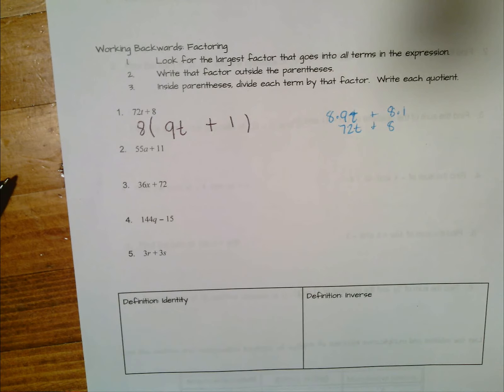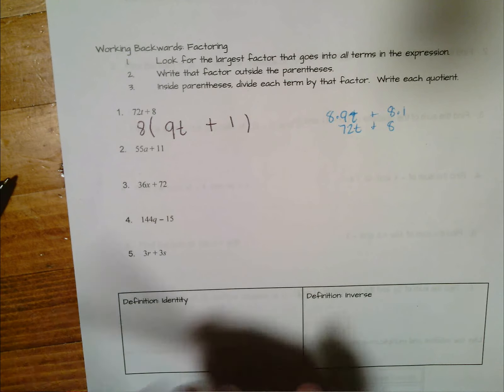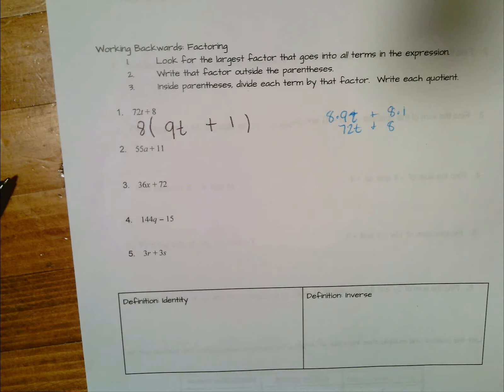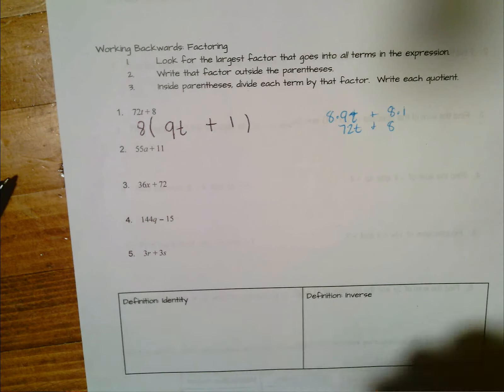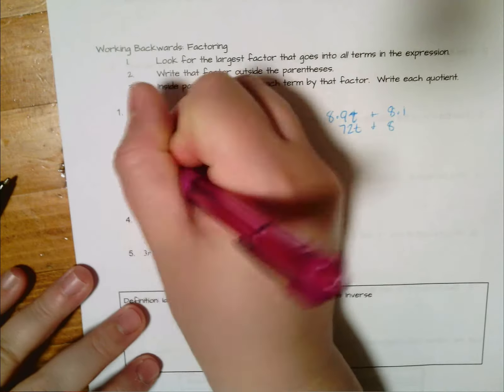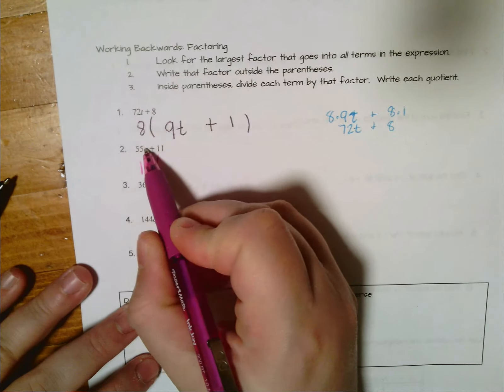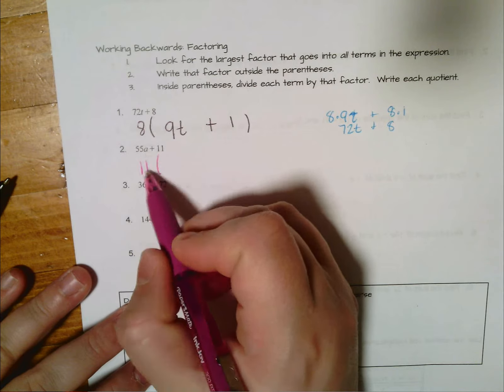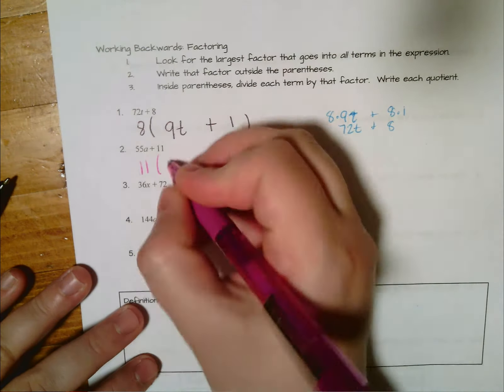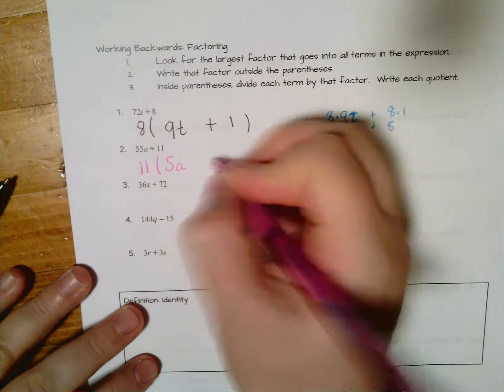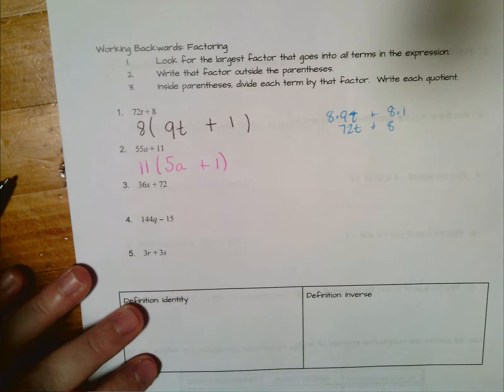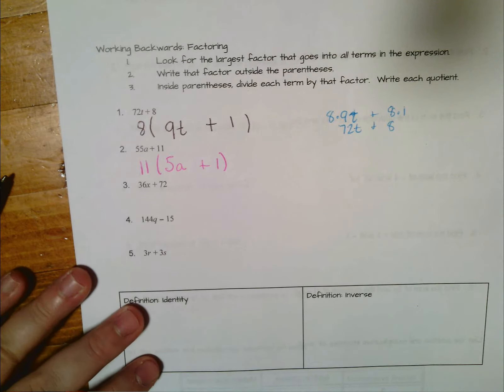So let's try a couple more examples together. For number two, my terms are 55a and 11. The biggest number that goes into both of those is 11, so I'll write 11 here. 11 times 5 will give us 55a, not just 5 but 5a, plus 11 times 1 gives us itself.